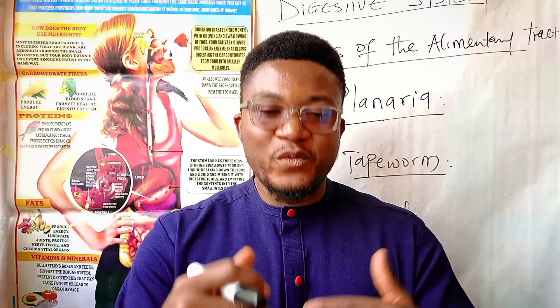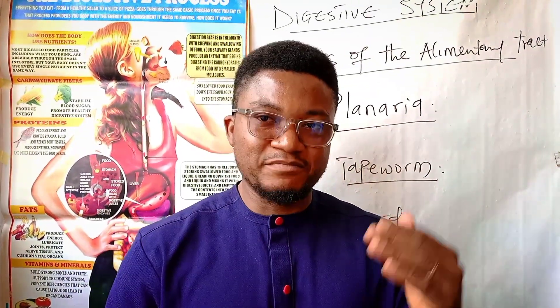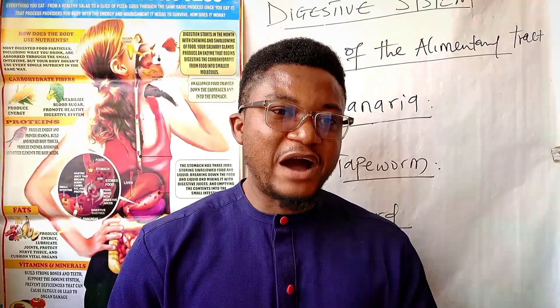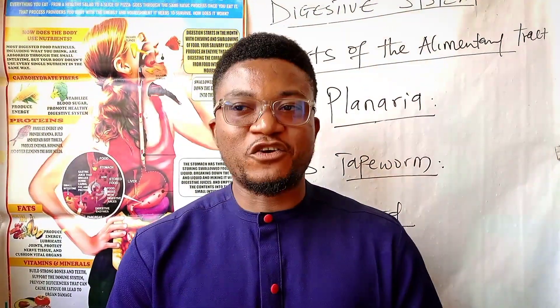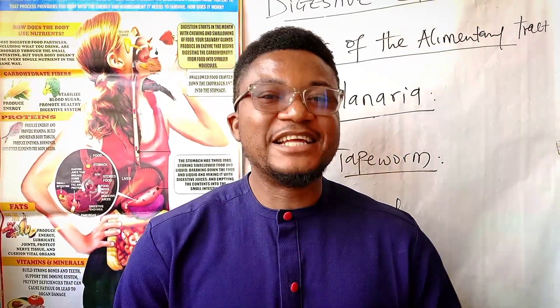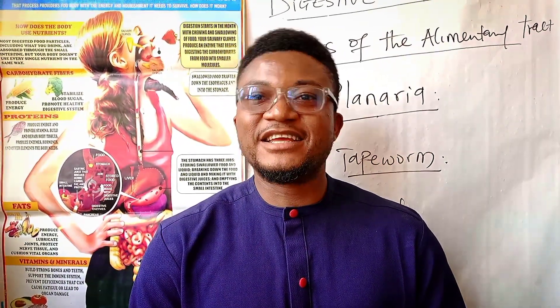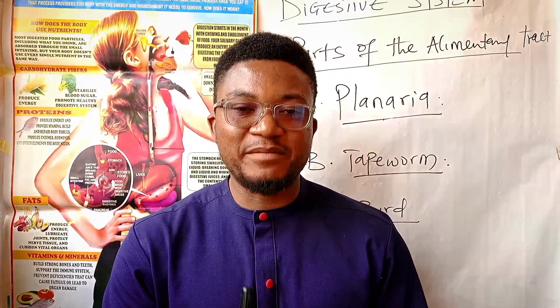So we have discussed the digestive pathway of the bird: it starts from the beak that picks up food, to the mouth, to the pharynx, to the oesophagus, the crop, the proventriculus, the gizzard, the intestine, the caeca, the rectum, and the anus. The next alimentary tract we are going to discuss is that of man.